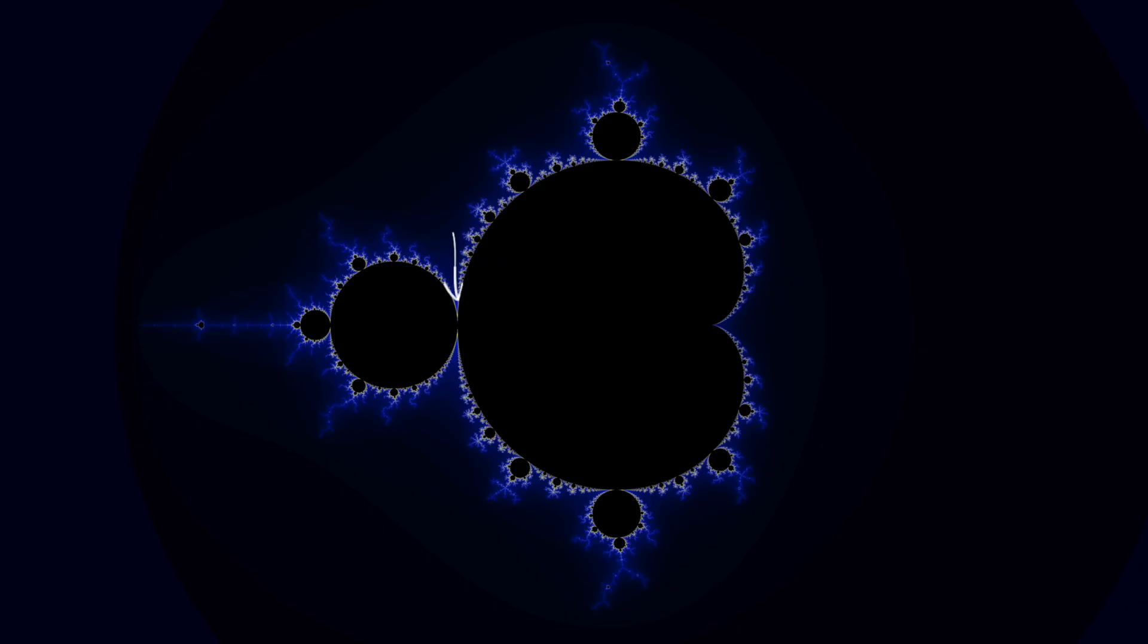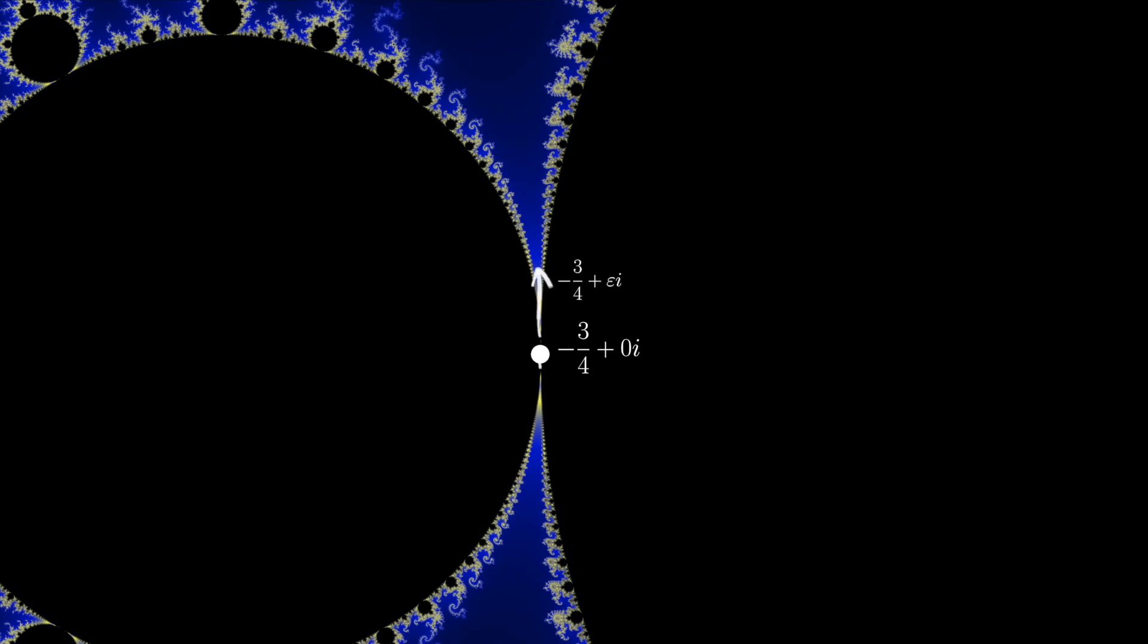Now take a look at this interesting spot right here, where the large circle to the left and the large cardioid to the right, sometimes referred to as the butt of the Mandelbrot set, meet. They touch at only a single point, the real number minus 3 quarters. So going even slightly above or slightly below that point, with a tiny imaginary number, will lie outside the set.